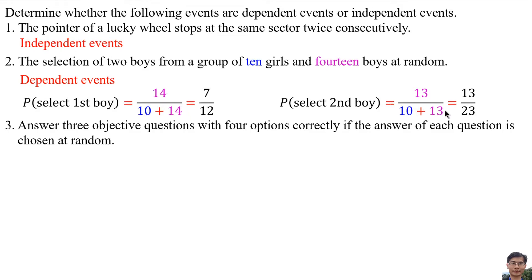So, 10 girls plus 13 boys remain. Therefore, the probability of selecting the second boy is affected by the probability of selecting the first boy. So they are dependent events.